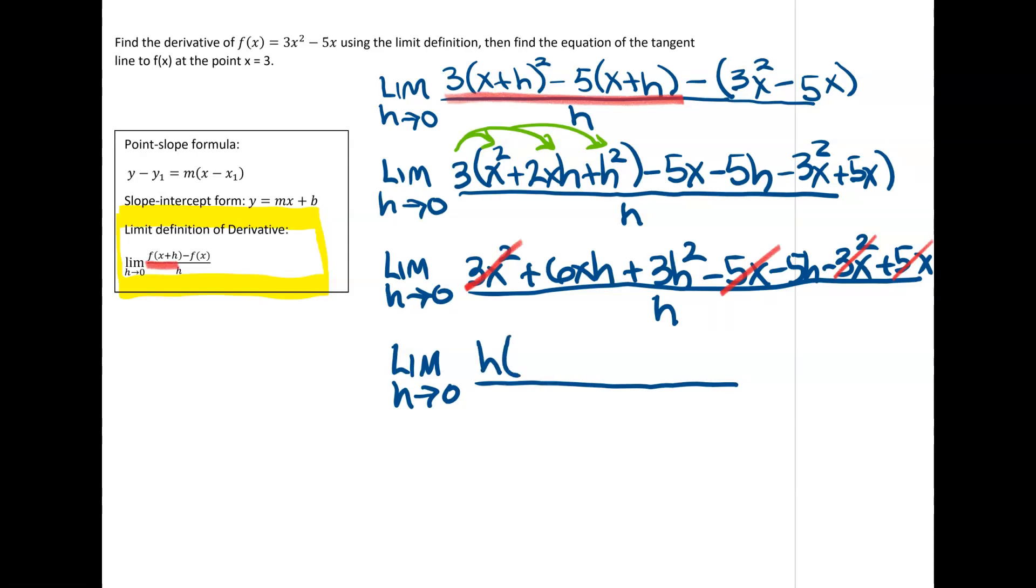So that 6xh becomes 6x. 3h squared is 3h. And minus 5h is minus 5. All divided by h. And I factored that h out knowing that I'm going to be able to cancel an h. So always with that limit definition, you always end up with an h that factors out and canceling.